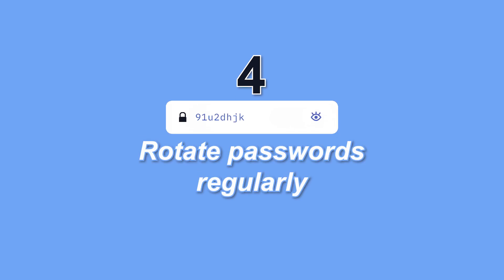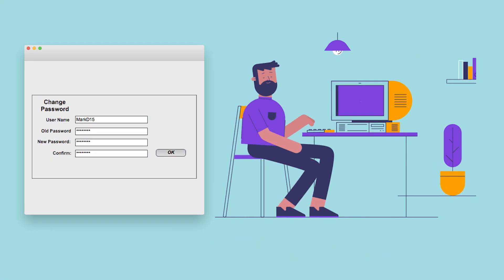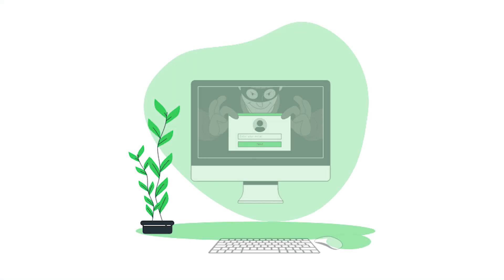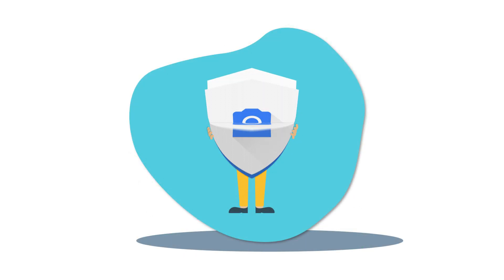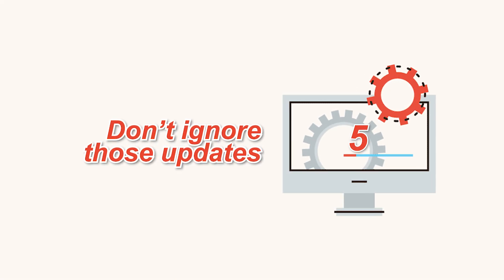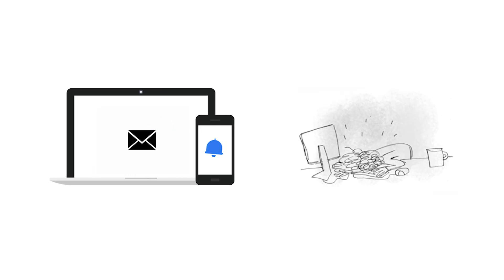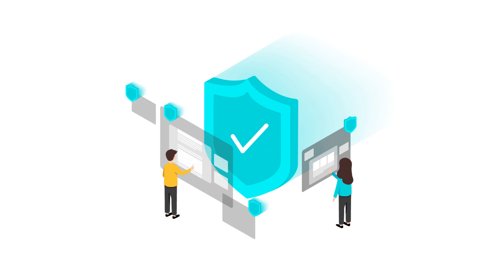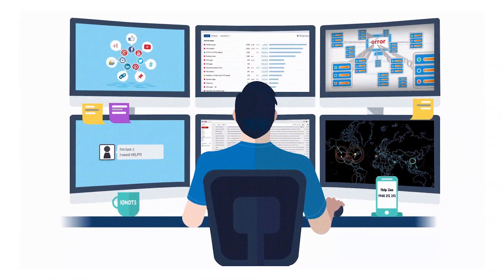Number four, rotate passwords regularly. If you've got online accounts, you should get in the habit of regularly rotating your passwords to prevent an attacker from gaining unlimited access. Your accounts may have been compromised without you knowing, so adding that extra layer of protection through password rotation can prevent ongoing attacks and lock out potential attackers. Don't ignore those updates. Receiving numerous update messages can be frustrating, and it can be tempting to put them off or ignore them altogether. Don't do this. Security patches and updates are released for a reason, most commonly to keep you up to date with modern cyber attack methods by patching holes in security.